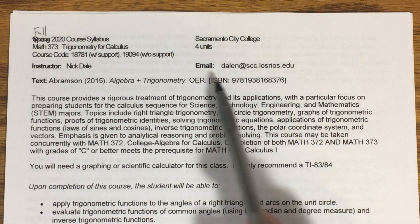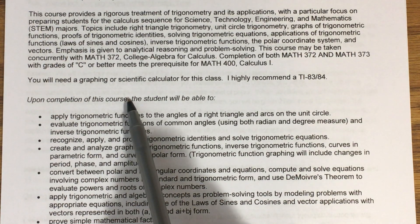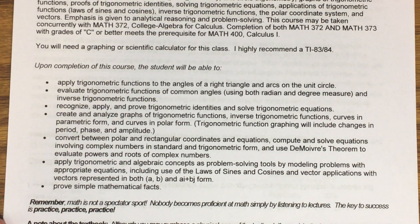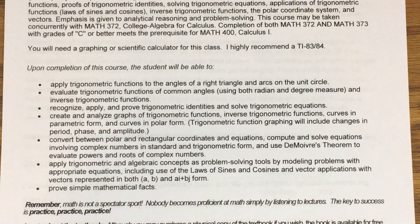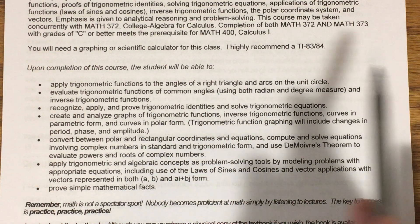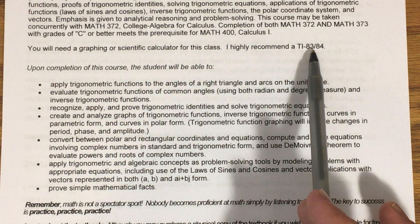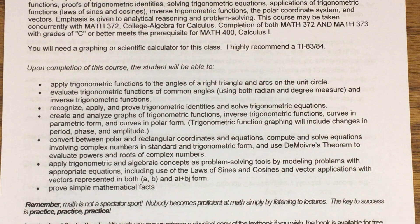Below the textbook mention is the catalog description and the student learning outcomes for the course. I'm not going to read through those — they're available in the course catalog, but I encourage you to look over them on your own. You'll need a graphing or scientific calculator for this course. My recommendation is a TI-83 or TI-84. Those are standard graphing calculators that do everything you need, not only for this class but for calculus and things that come later. Because this class is online, you may opt to use something on a desktop computer instead, and that's fine as well.